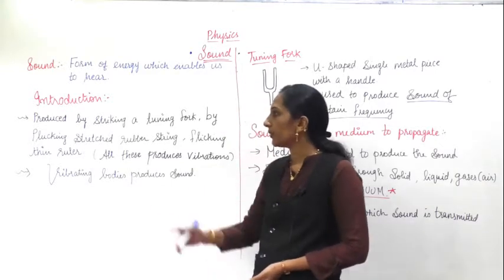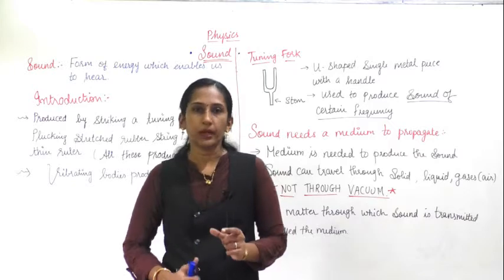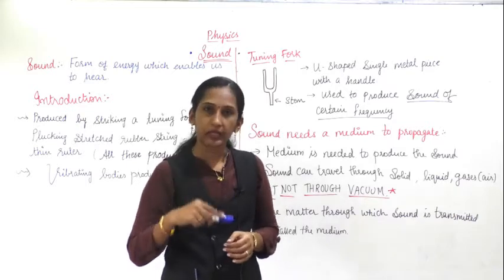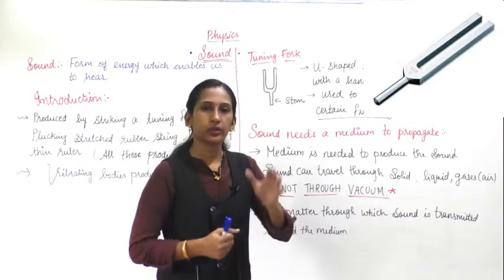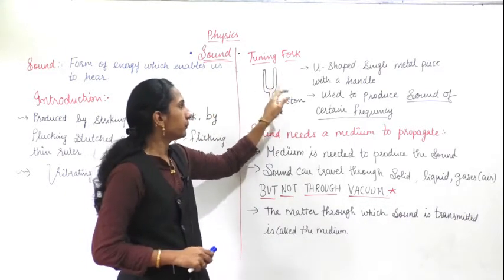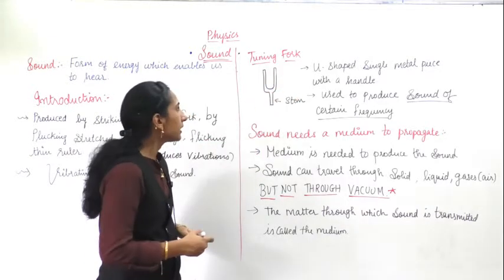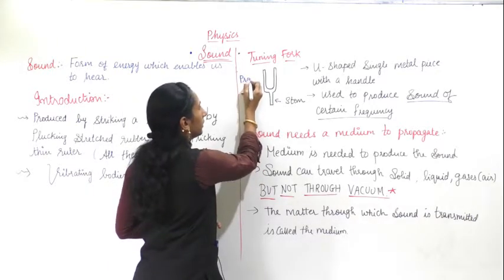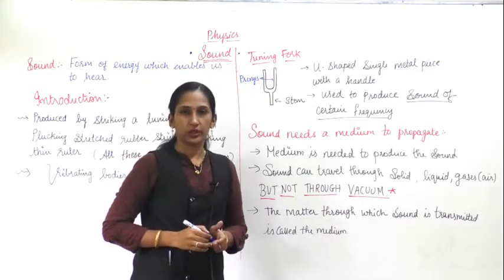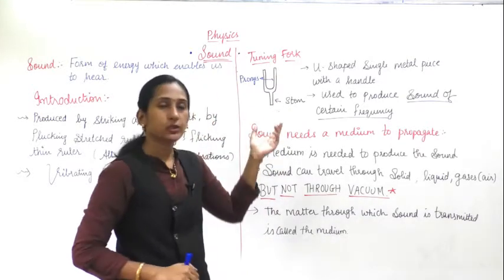Sound is produced by striking a tuning fork. What is a tuning fork? It is a U-shaped single metal piece with a handle. If you look at a tuning fork, it is U-shaped with a handle and is made entirely of metal. It has two arms which are called prongs, and the handle part is called the stem of the tuning fork.